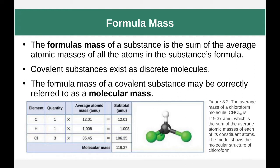So in this case we have one carbon, one, two, three chlorines, and one hydrogen. We multiply carbon by one, hydrogen by one, and chlorine by three. We get these values in AMU, add them together, and we see that we wind up with 119.37 AMU for our molecule.